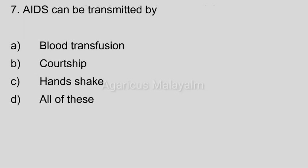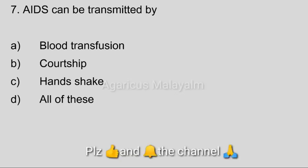Seventh question: AIDS can be transmitted by. Answer options — Option A: Blood transfusion. Option B: Coreship. Option C: Handshake. Option D: All of these. Correct answer: Option A, Blood transfusion.